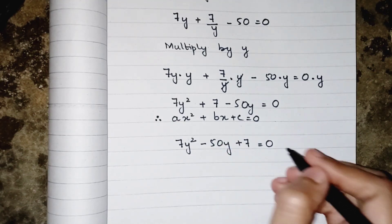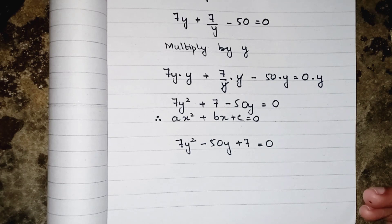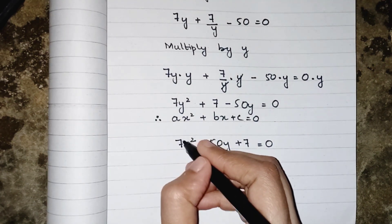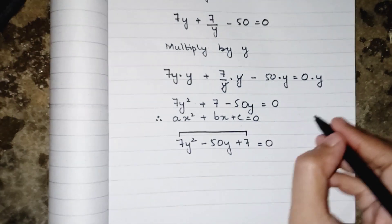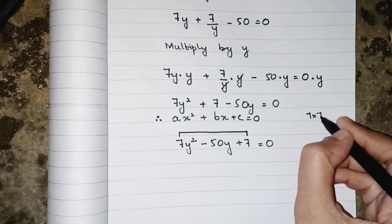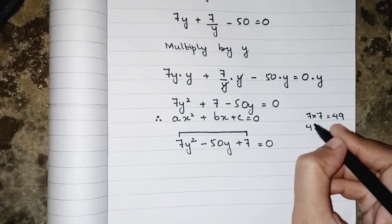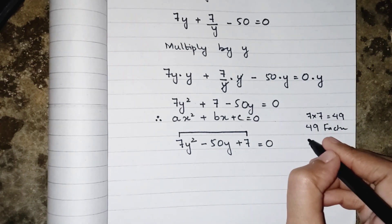To find the value of y we have three methods to solve a quadratic equation: number one factorization method, number two completing the square method, and number three the quadratic formula. Here we are applying the factorization method. We multiply the first and last terms: 7 multiplied by 7 equals 49.